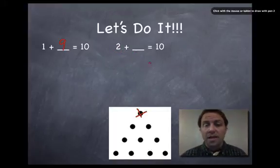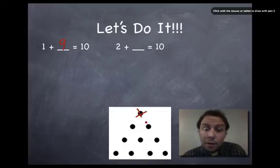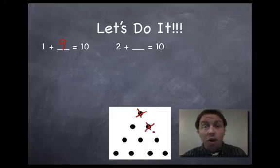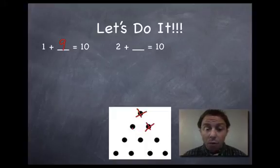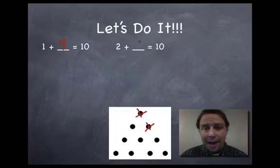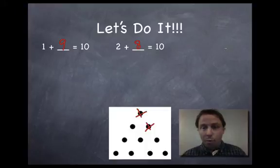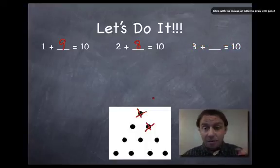2 plus what equals 10. What are we gonna do this time? If you thought cross out two dots you're right and now let's count the remainder 1 2 3 4 5 6 7 8. 8 is the remainder that means 2 plus 8 equals 10. We're picking up steam now let's keep going.